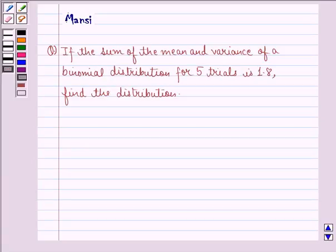Hi and welcome to the session. Let's work out the following question. The question says if the sum of the mean and variance of a binomial distribution for 5 trials is 1.8, find the distribution.